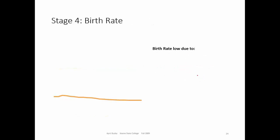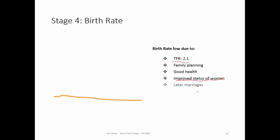The birth rate is low due to the total fertility rate being 2.1, just at replacement. Family planning — women plan their families with fewer accidental pregnancies. Good health for mothers and children means fewer babies die, so the birth rate can be low. Improved status of women, better health of women, and later marriages — this is key, and in our next segment this is going to be even more of a key factor.